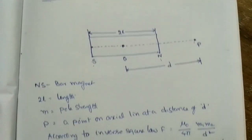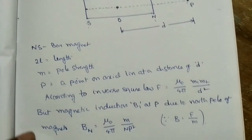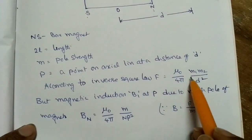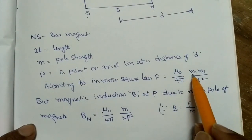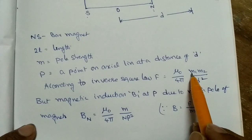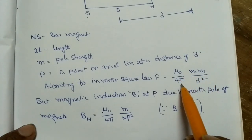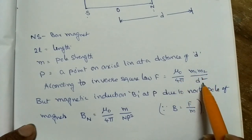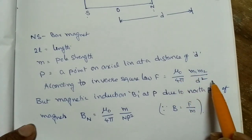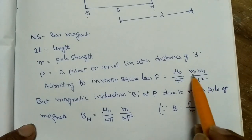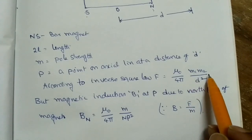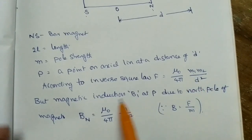According to the inverse square law, F is equal to the force between two poles: F = μ₀/4π × m₁m₂/d², where d² means the distance squared between the two poles.